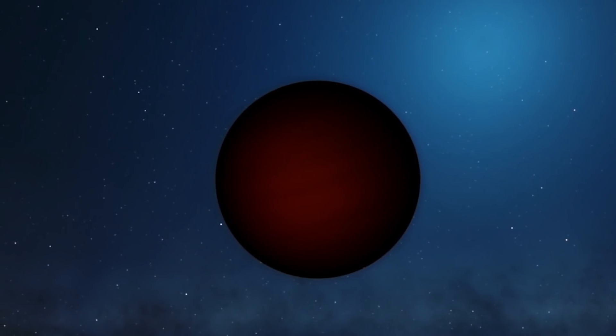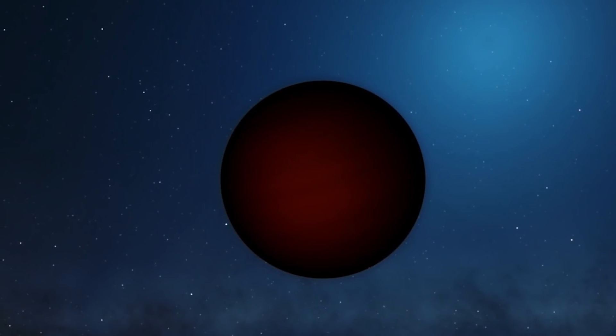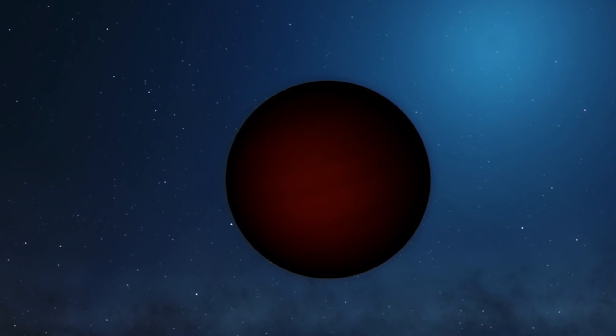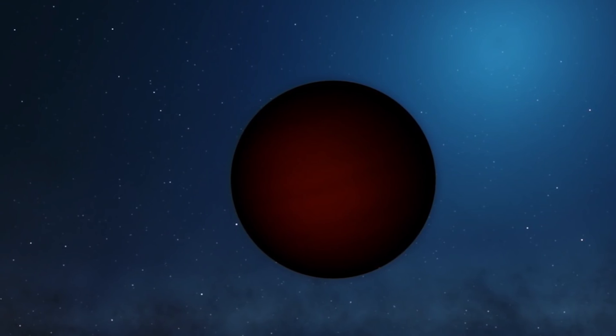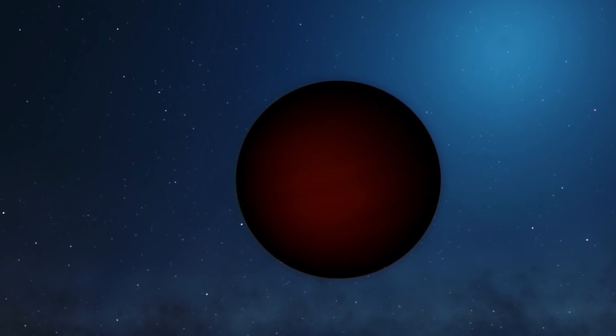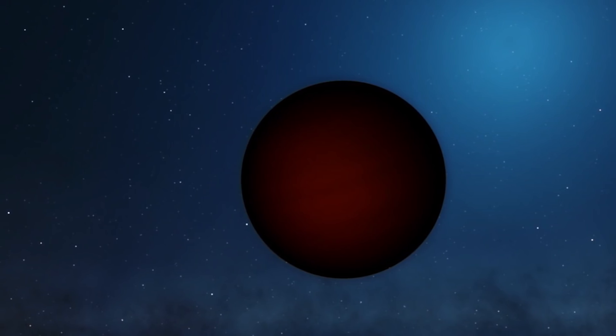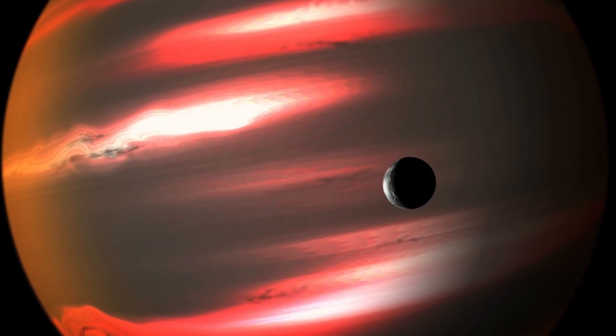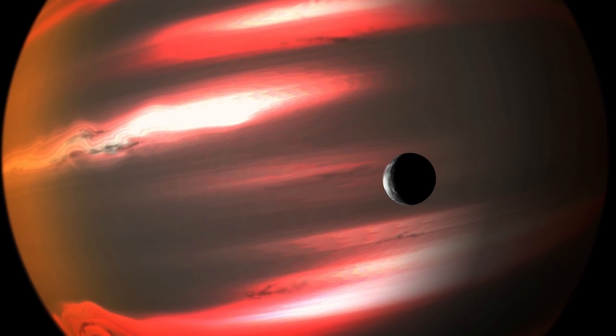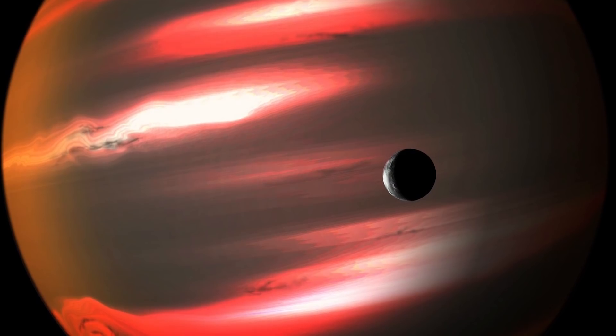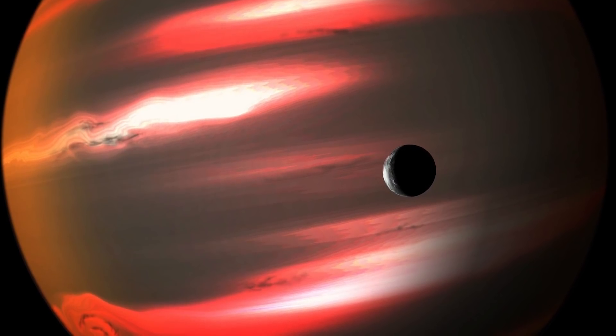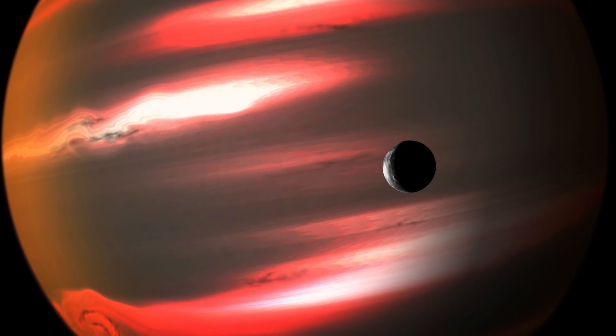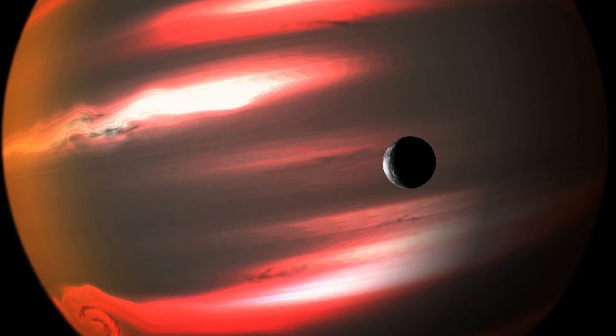Despite this however, the exoplanet is darker than the darkest acrylic paint you can buy at the store. In fact, it appears to be darker than nearly anything else, with perhaps the notable exception of a black hole. Scientists aren't sure how such a hot planet could be so dark, but one promising theory posits that light-absorbing chemicals like vaporized sodium and potassium, or gaseous titanium oxide, are large components of its atmosphere.